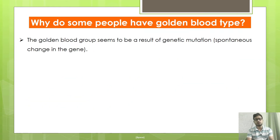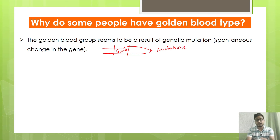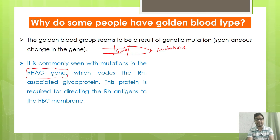Why do some people have golden blood type? The golden blood group seems to be a result of genetic mutation — a spontaneous change in the genes. In some genes, certain mutations can cause the Rh null blood or golden blood phenotype to occur. It is commonly seen with mutations of the RHAG gene. People having RHAG mutations do not synthesize Rh antigens and therefore lack all 61 of them.